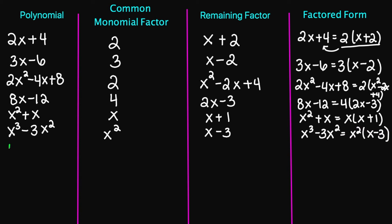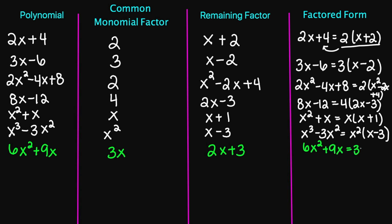So let's try 6x squared plus 9x. My common factor is going to be 3x. If I factor out a 3x, I'll be left with 2x plus 3. So my factored form, we have 6x squared plus 9x equals 3x times 2x plus 3.